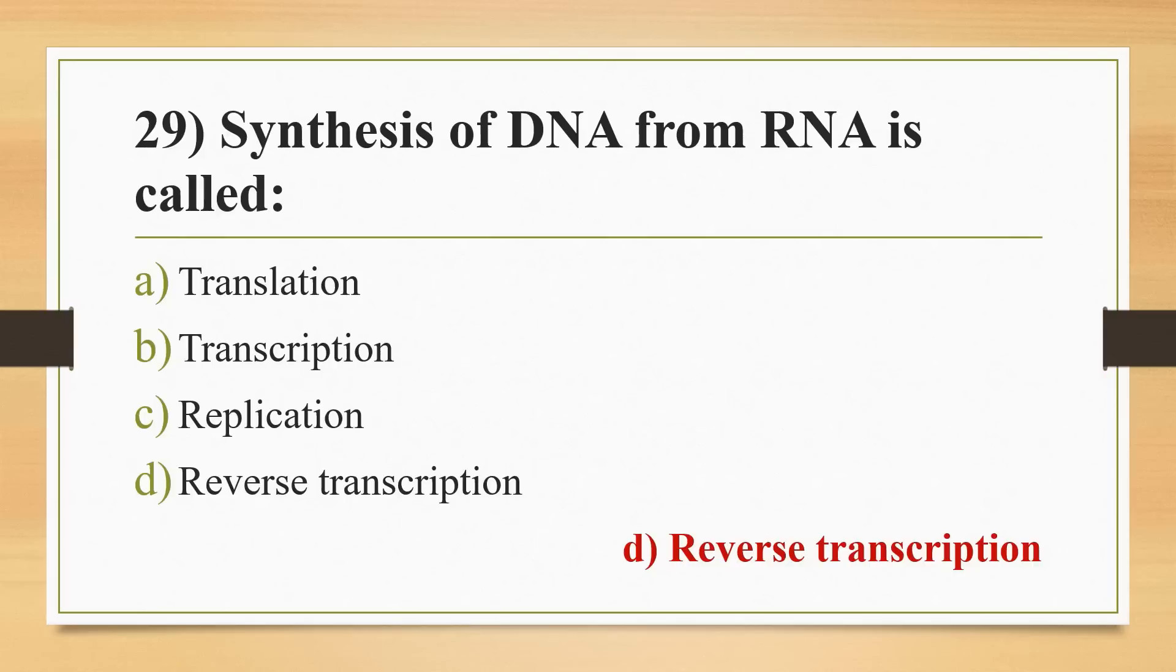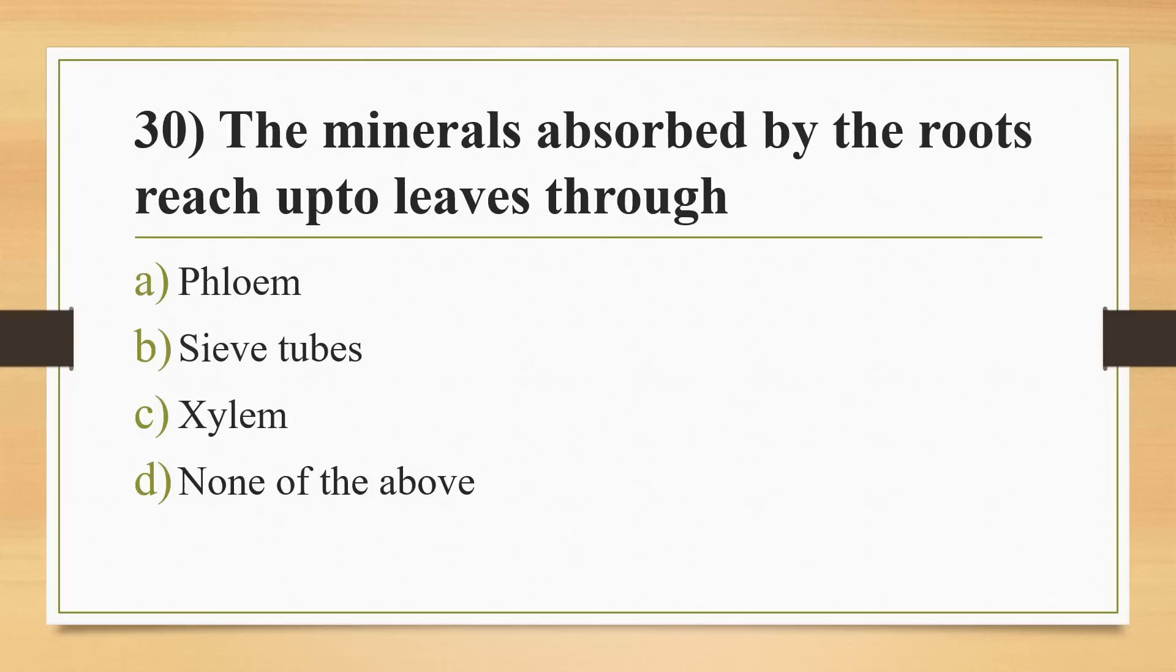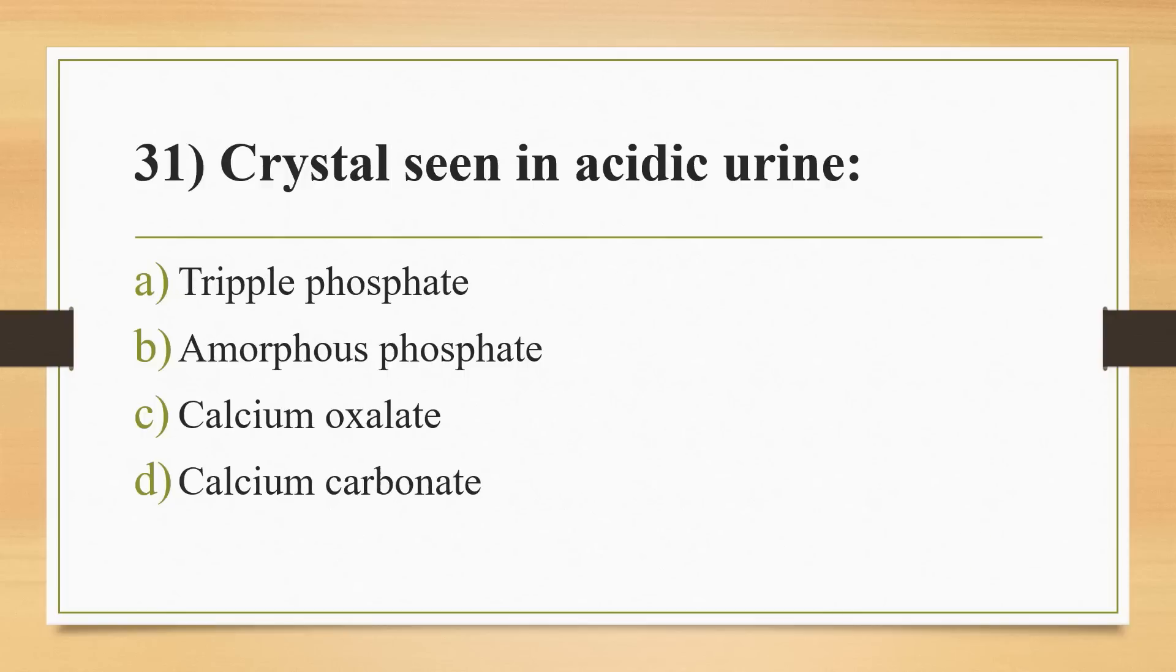Thirtieth question: the minerals absorbed by the roots reach up to leaves through? Options: phloem, sieve tubes, xylem, or none of the above. Answer is Option C, xylem. Thirty-first question: crystal seen in acidic urine? Options: triple phosphate, amorphous phosphate, calcium oxalate, or calcium carbonate. Answer is Option C, calcium oxalate.